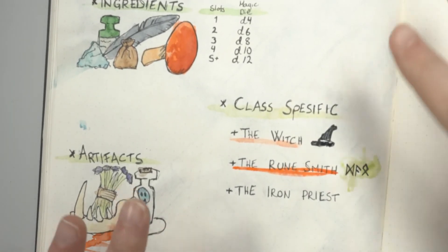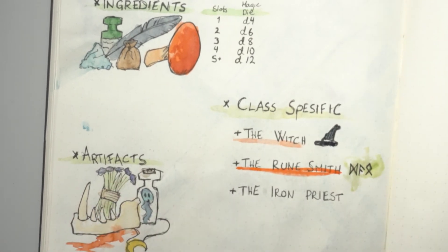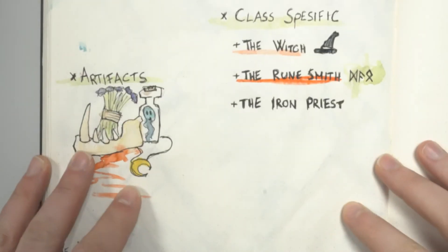As I said, it's still a rough sketch. Lastly, the Iron Priest, which is the 40k inquisitor of the bunch.